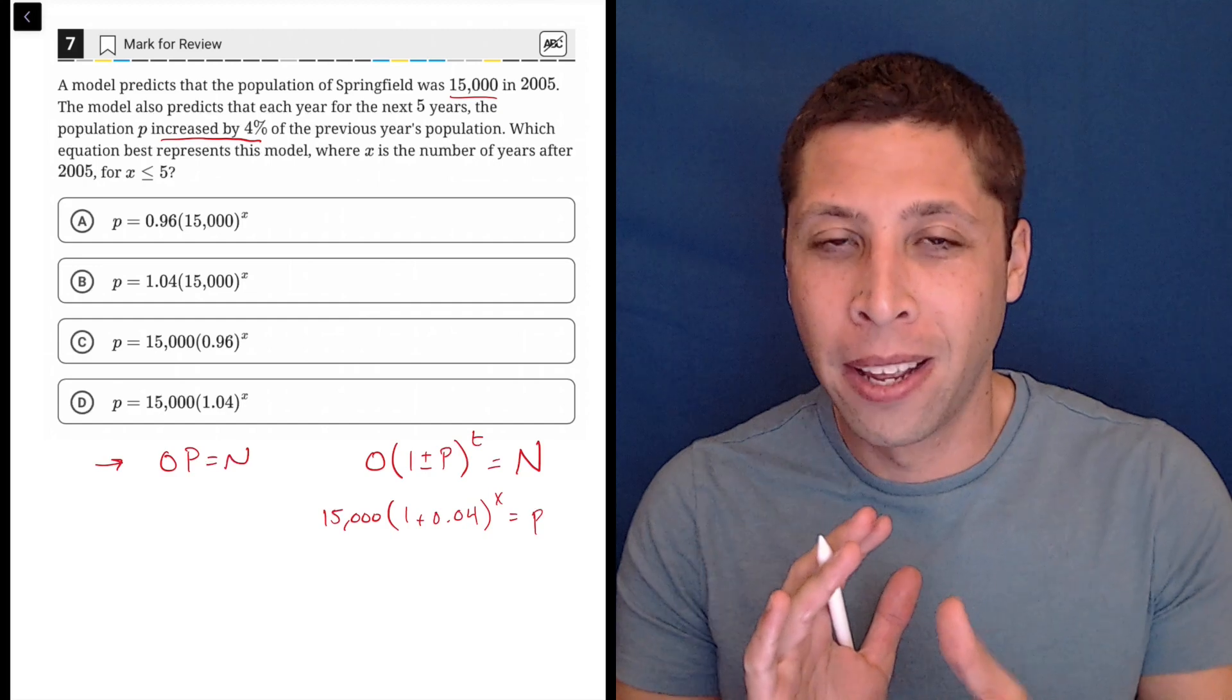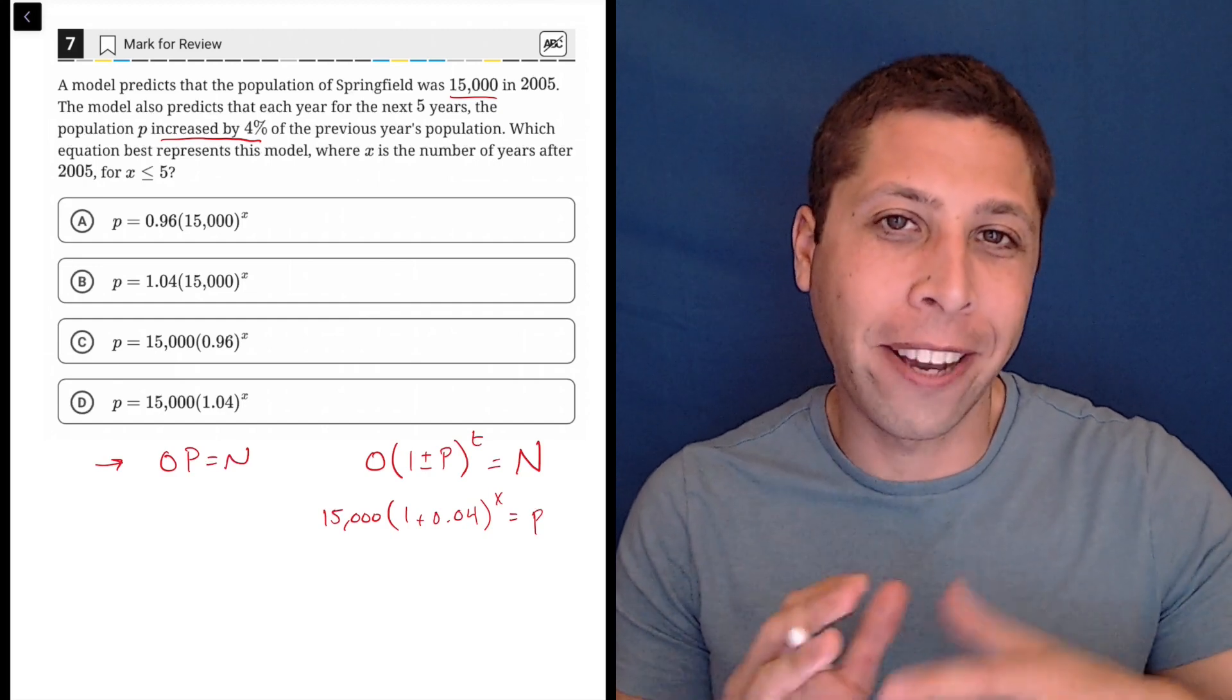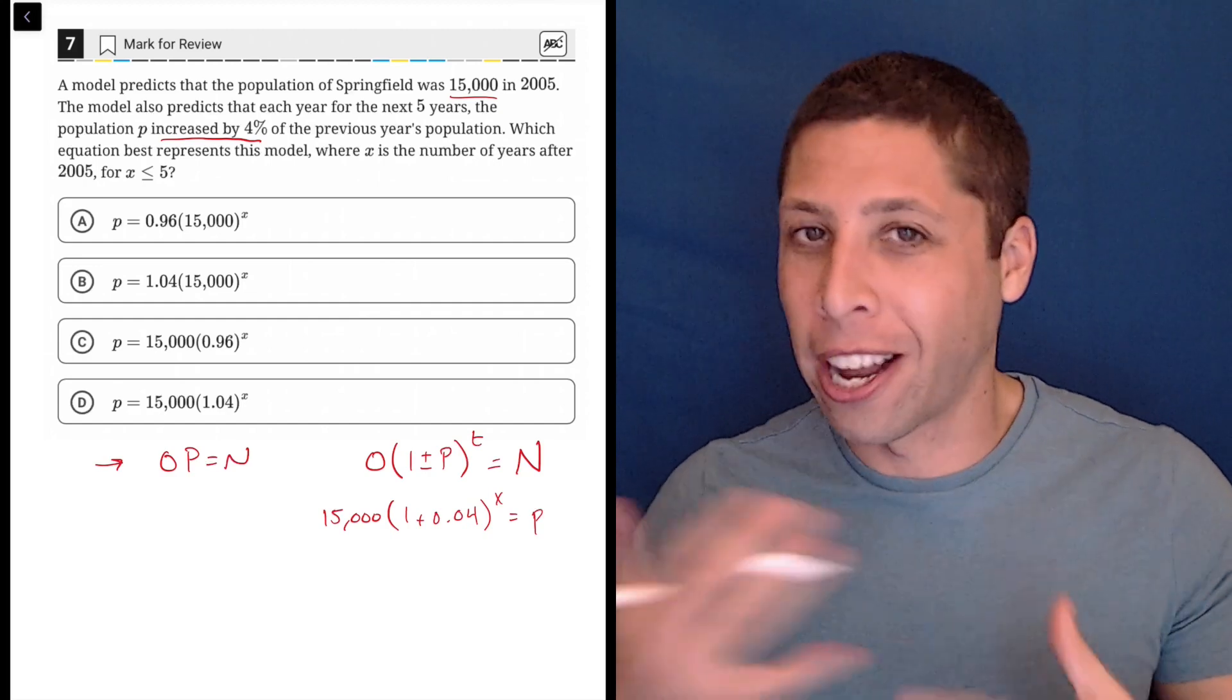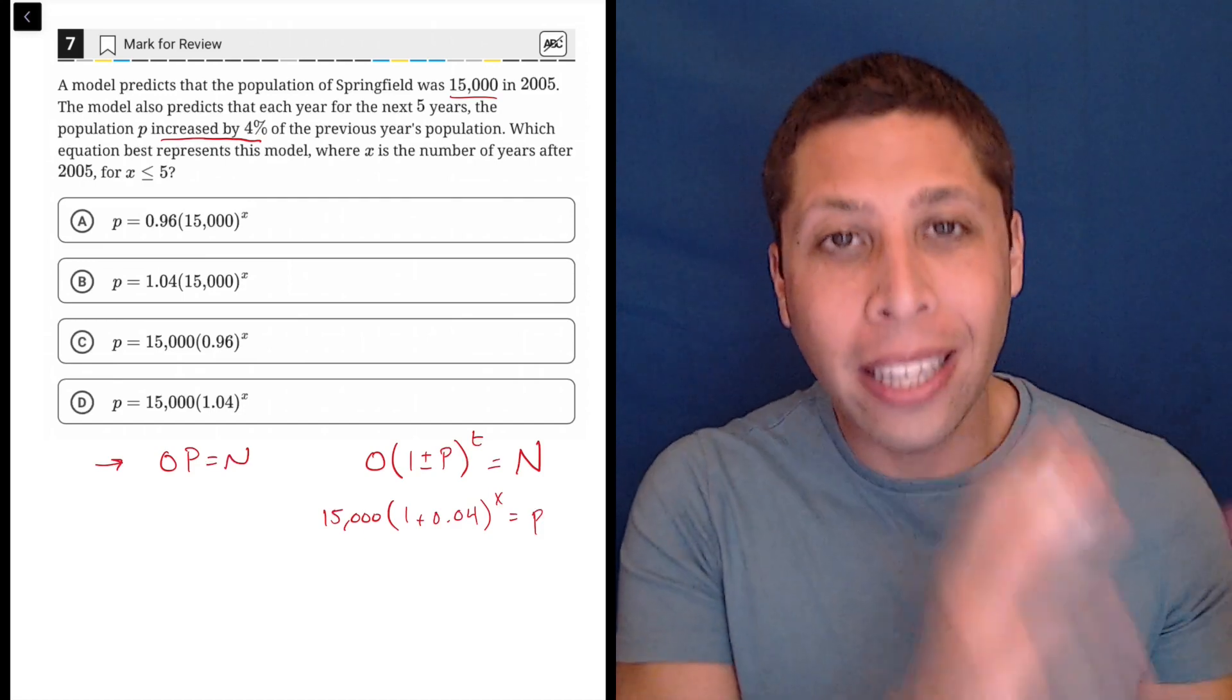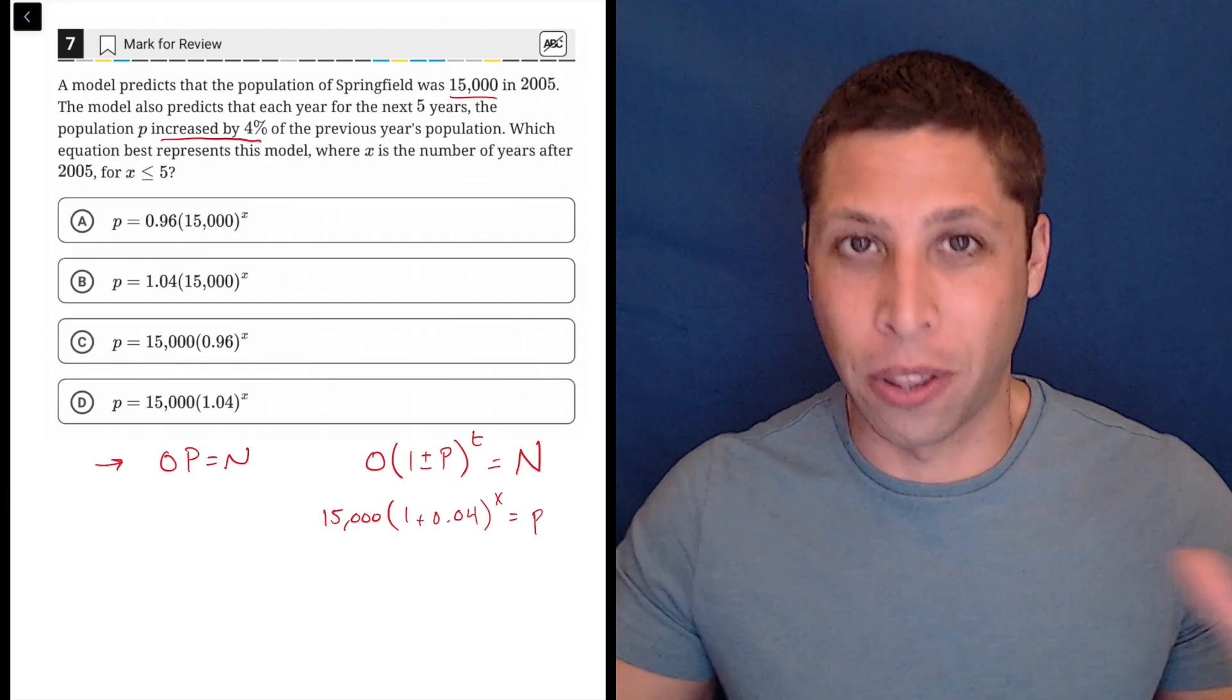They're doing something a little sneaky here. They know that you think of p as a percentage and they're using this variable in a different way. So the actual letter doesn't matter. It's the placement of the letter that helps us with the formula.